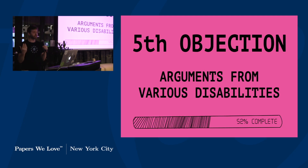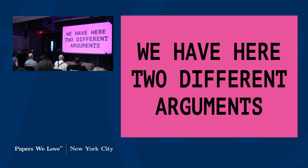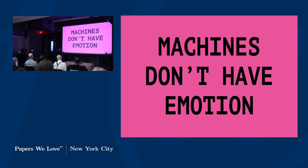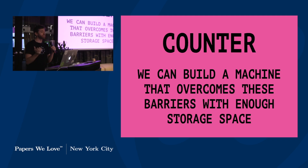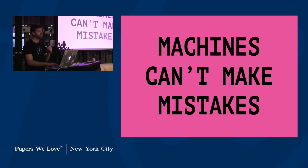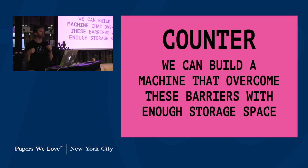The fifth objection is the argument from various disabilities, and we actually have two different arguments here. One is that machines don't have emotions, so they will not respond the same way a human being would. His counter is that we can build a machine that overcomes these barriers with enough storage space. The other part is that machines can't make mistakes — input in equals input out, you will always get the same thing out that you put in, and hence you would recognize them as a machine.